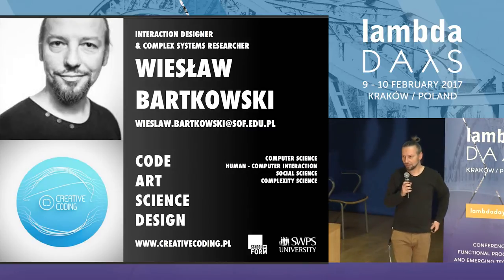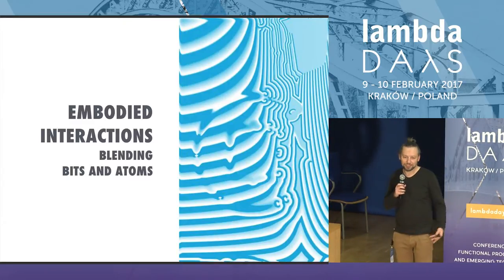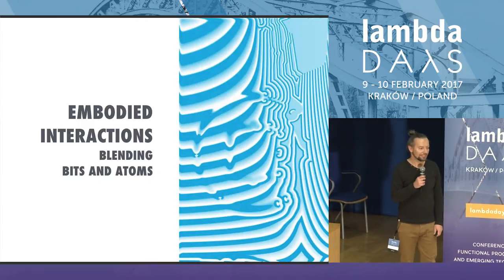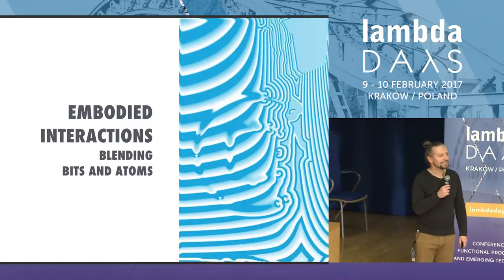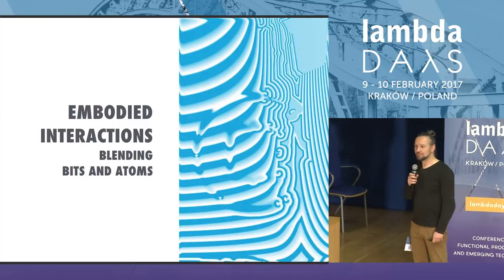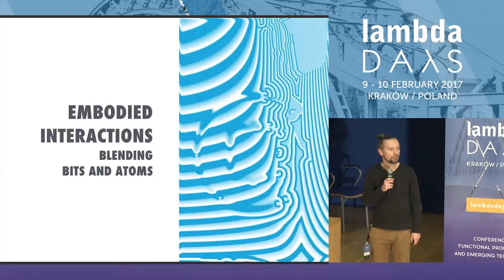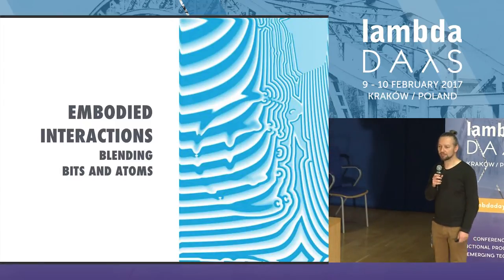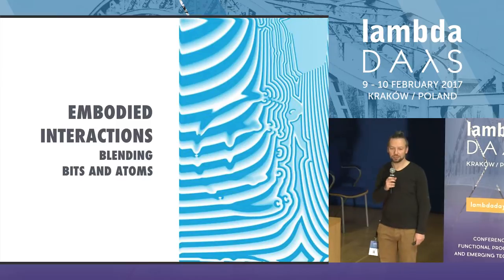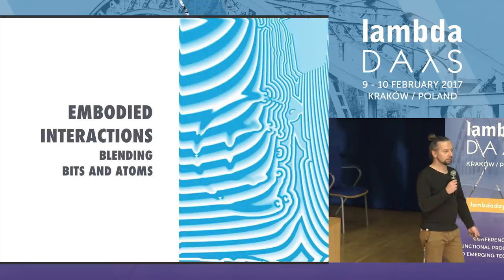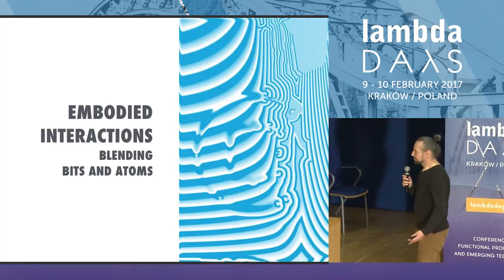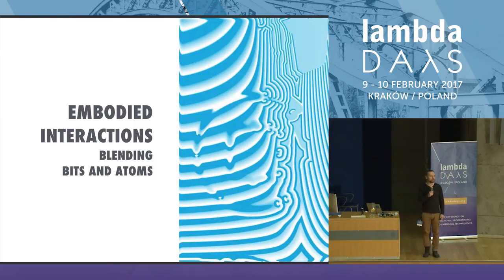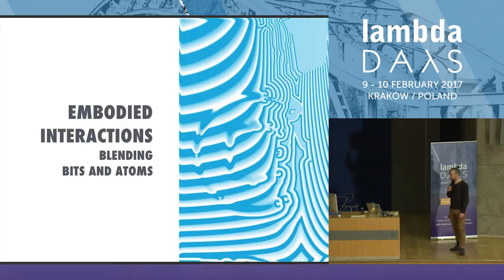I will talk today about embodiment. What does it mean, embodiment? Everybody has a body, and the body has a very big meaning for our perception. We can say that our body is an extension of our cognitive system, and I will talk from this perspective about interaction with technology — what does it mean to make technology for interaction with the body? Not only with our eyes, with our logic, with our abstract way of thinking, but more with emotion, more with senses and with social context.